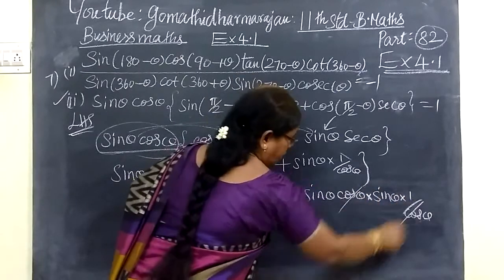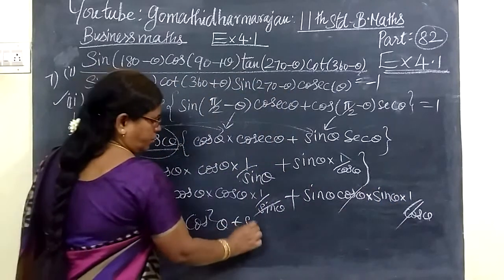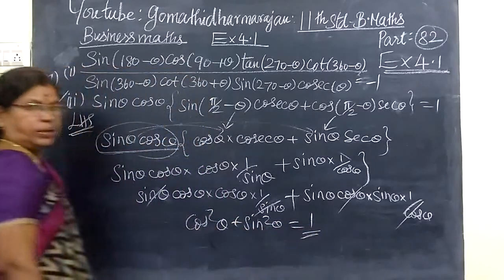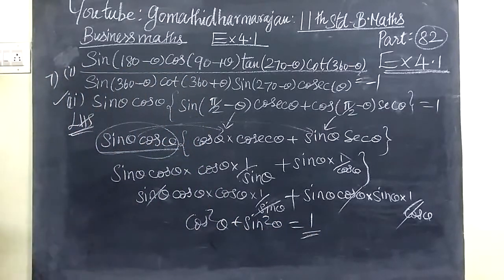We know sin²θ + cos²θ = 1, and with this we take the next step.